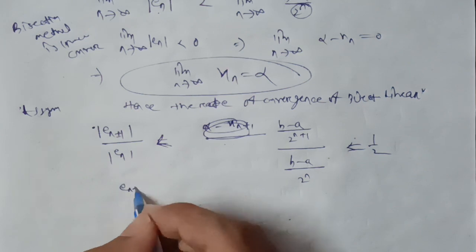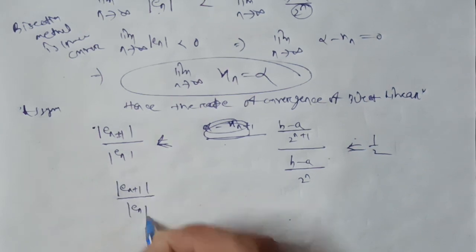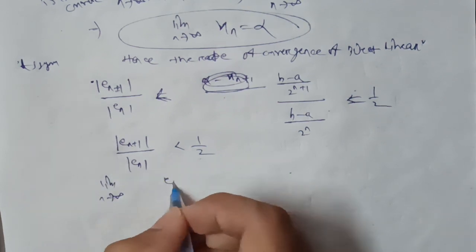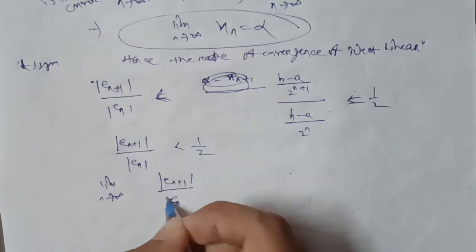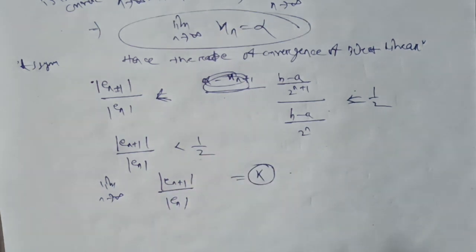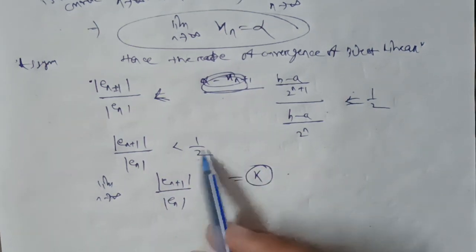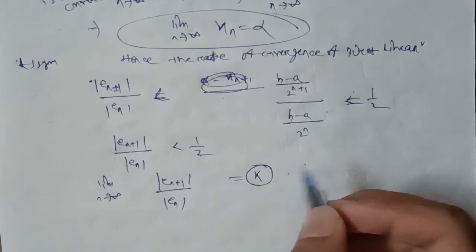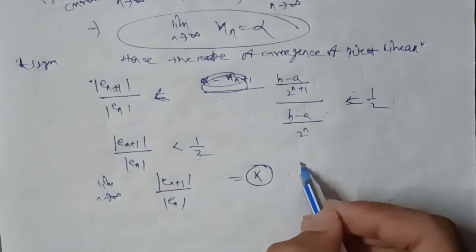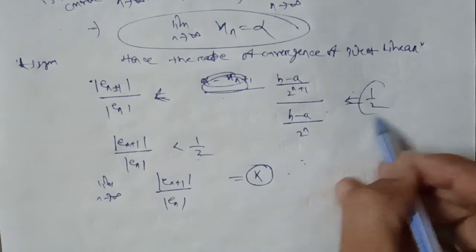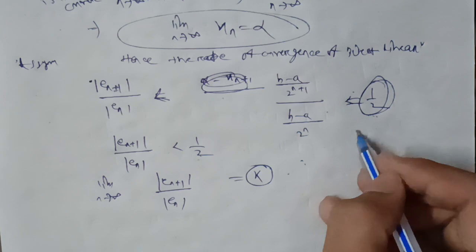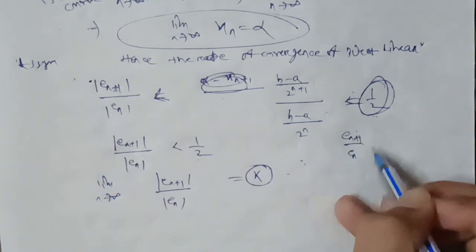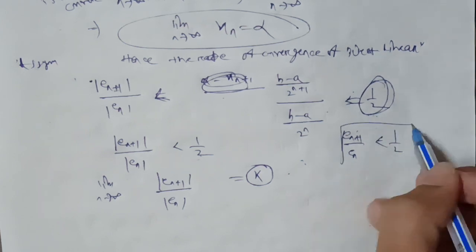After cancellation, the remaining value is 1/2. Then |eₙ₊₁ / eₙ| is less than 1/2. Taking the limit as n tends to infinity of |eₙ₊₁ / eₙ| equals the constant k, which is 1/2. Since k is a nonzero constant, the bisection method is linearly convergent. The asymptotic error is 1/2, which is less than 1.